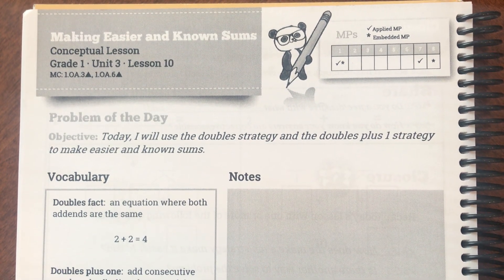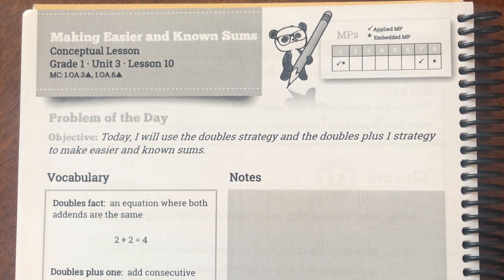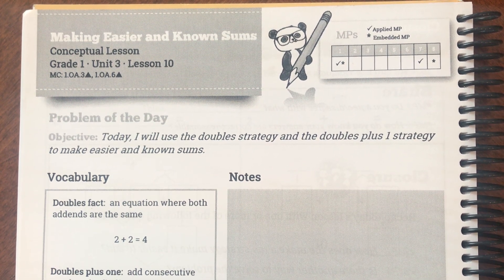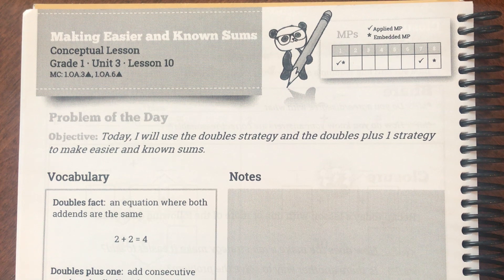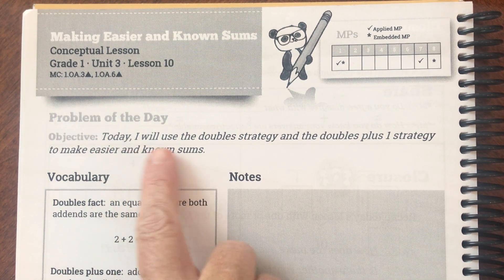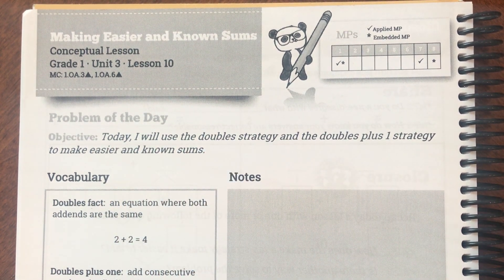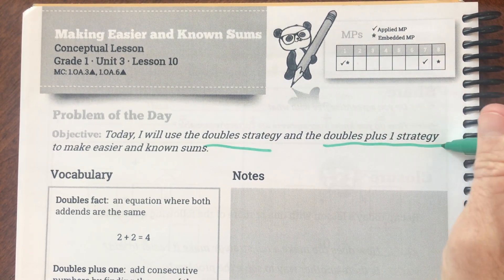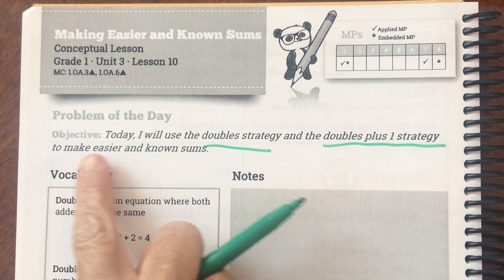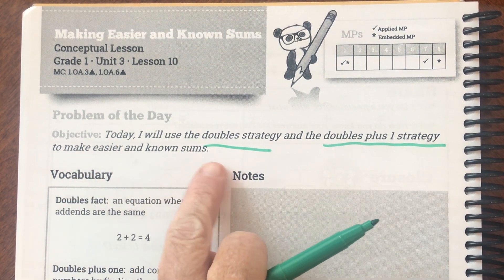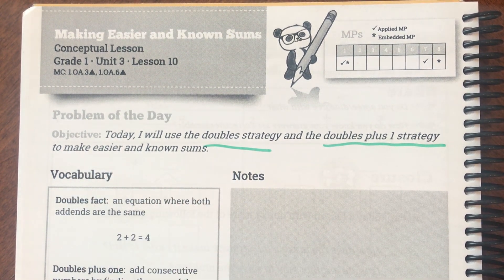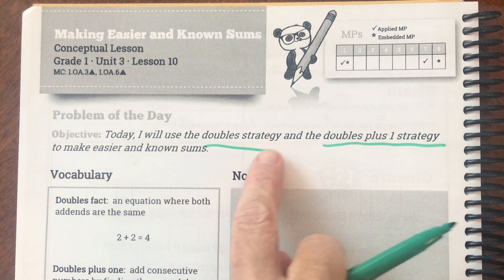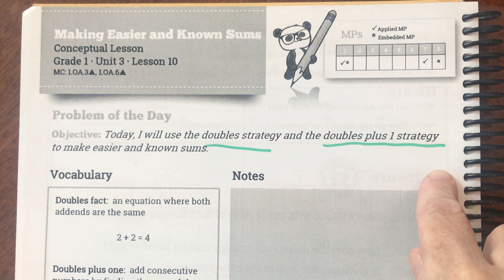Good morning boys and girls. Today we are on page 195. Our objective today says: today I will use the doubles strategy and the doubles plus one strategy to make easier and known sums. So we're moving on to something new today — we're going to be using the doubles strategy and the doubles plus one strategy.